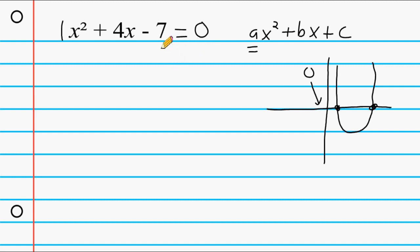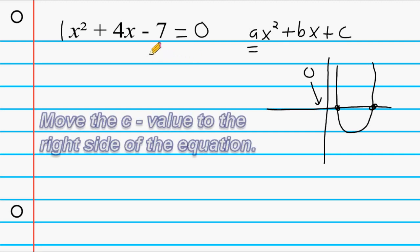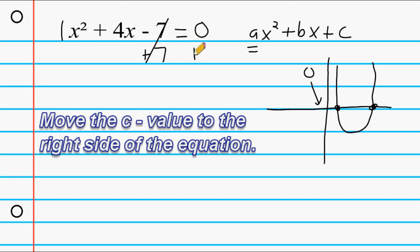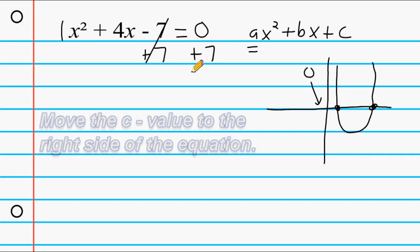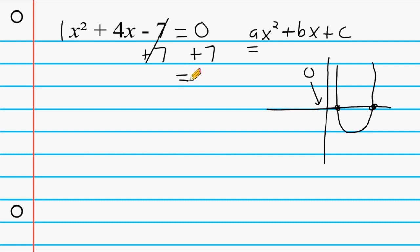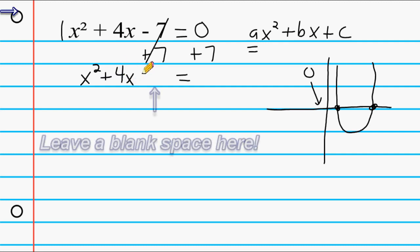Now that our a value equals 1 and the equation is set to 0, the next thing we do is take our c value and move it to the right-hand side. We take the opposite of minus 7, which is plus 7, and move it over. We rewrite our equation as x² + 4x = 7.